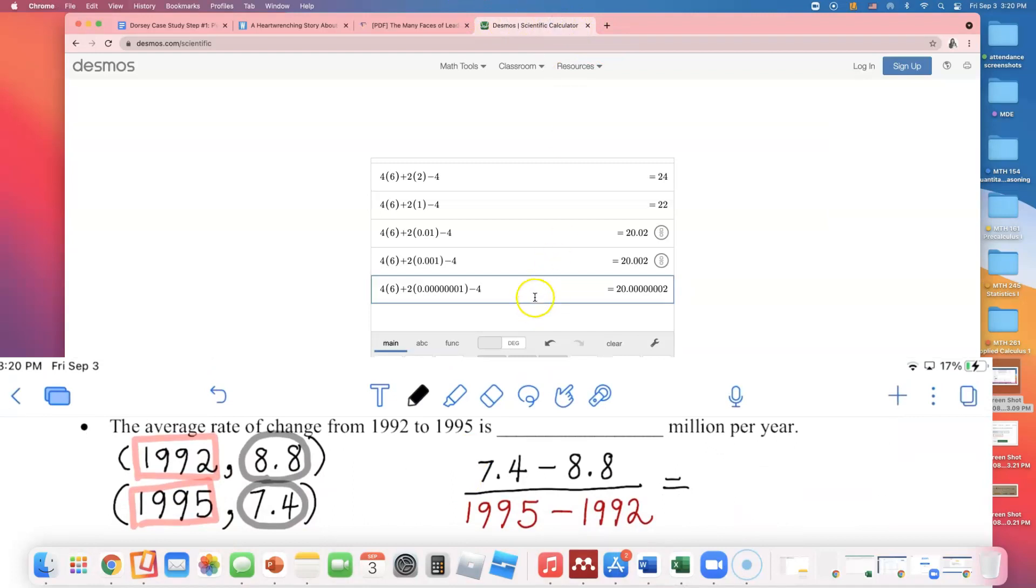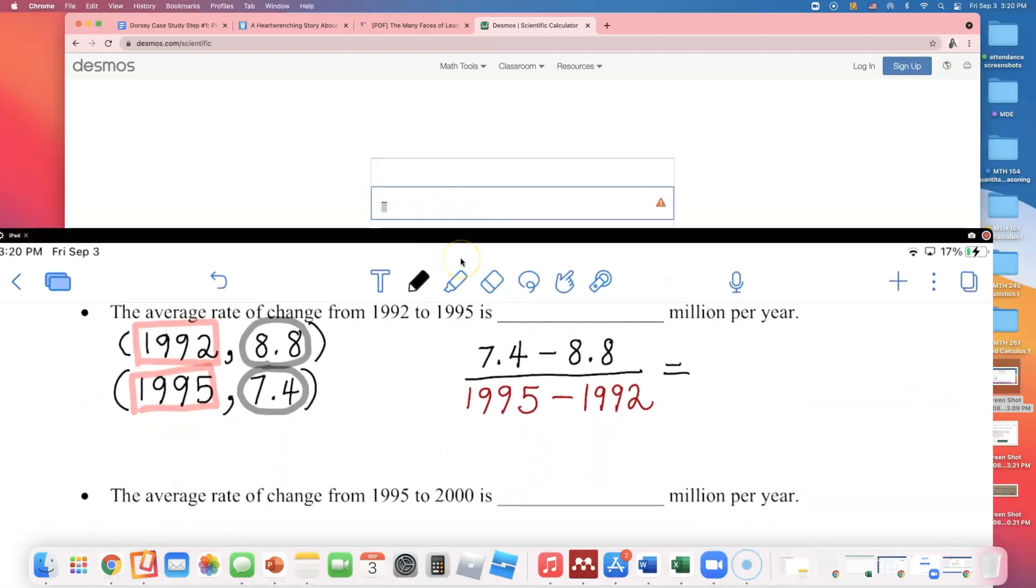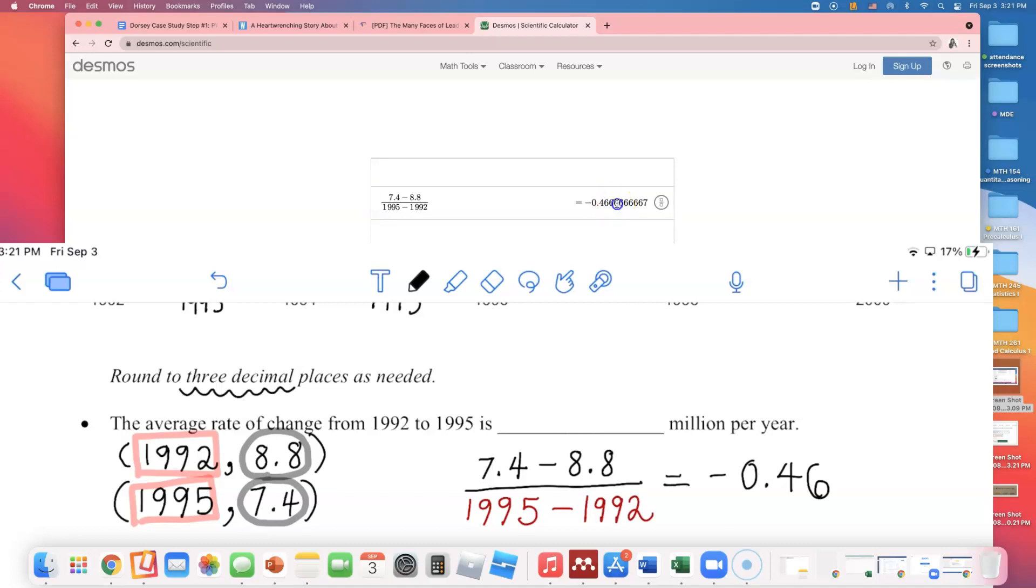I will do 7.4 minus 8.8, which will be a negative number, divided by 1995 minus 1992. So it's negative zero point. Now how did they want us to round this? Round to three decimal places as needed. I have to say negative zero point four six. I need one more number after this, but the fourth number is bigger than five, so let me round that up to seven.